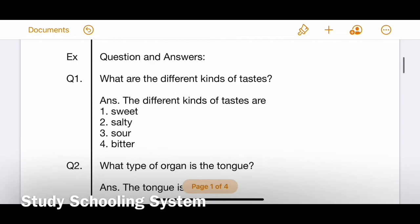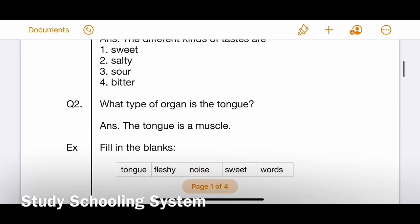The next exercise is question and answers. Question number one: What are the different kinds of tastes? There are four different kinds of tastes: number one sweet, number two salty, number three sour, number four bitter. Make sure to learn these four. Question number two: What type of organ is the tongue? The tongue is a muscle.